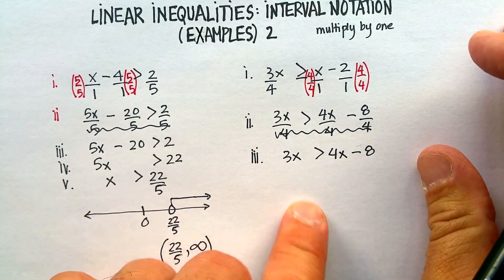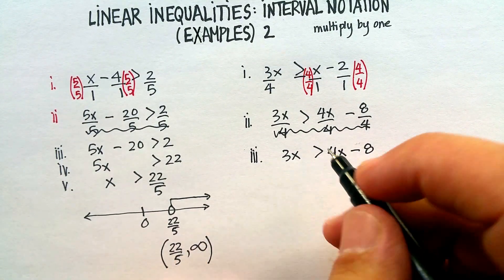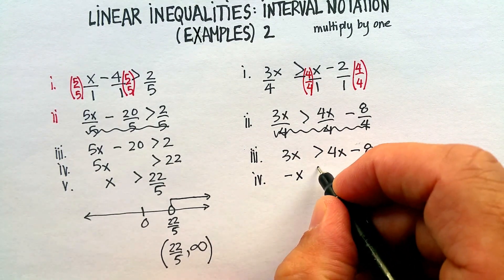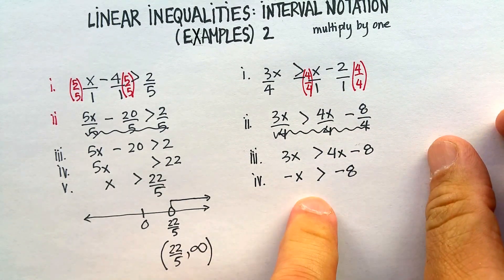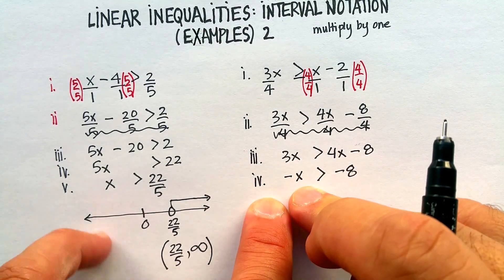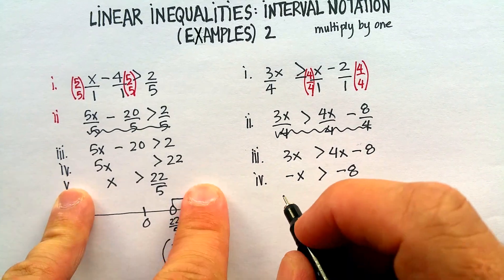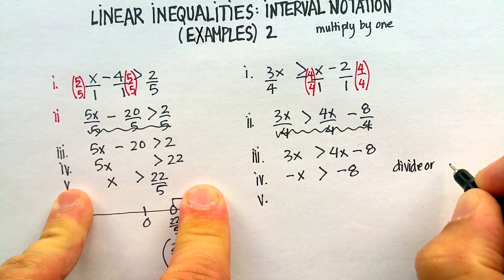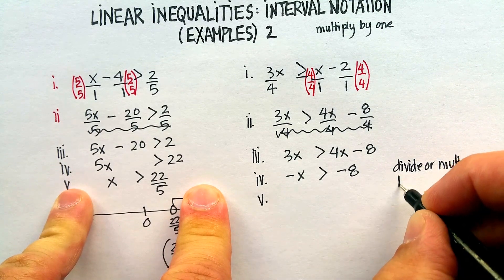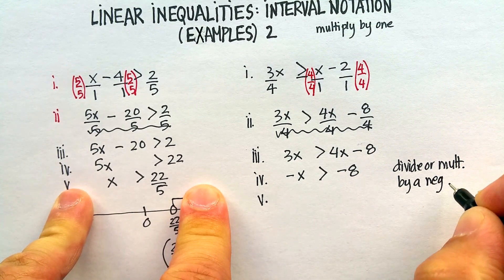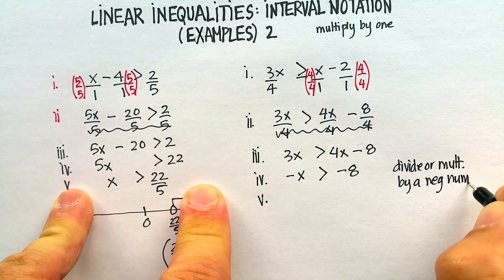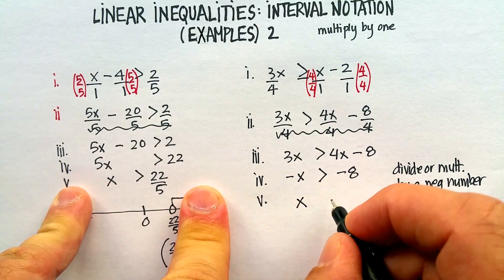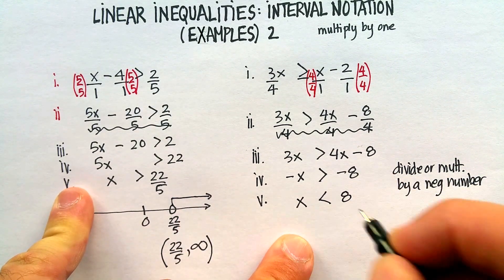That leaves me with 3x is greater than 4x minus 8 — much easier to solve. I'll subtract 4x from both sides to get all the x's on one side. Now I don't want a negative variable, so I'll divide both sides by negative one. Remember: when you divide or multiply by a negative number, you need to flip the direction of your inequality. So now I've got x is less than positive 8.